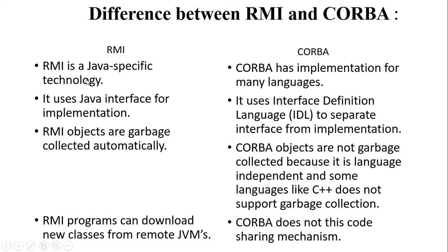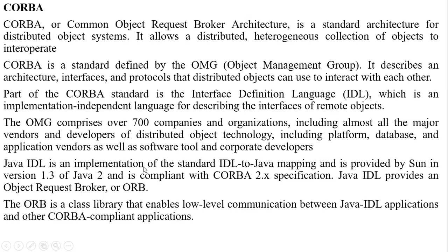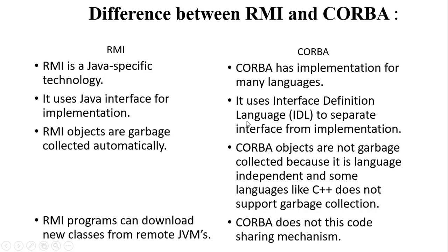Now, this is the difference between RMI and CORBA. RMI is a Java-specific technology, while CORBA has implementations for many languages — CORBA can be written in C, C++, Java, and COBOL. RMI uses Java interfaces for implementation, but CORBA uses Interface Definition Language (IDL) to separate interface from implementation. Java RMI objects are garbage collected automatically, but CORBA objects are not because it is language-independent and some languages like C++ do not support garbage collection.